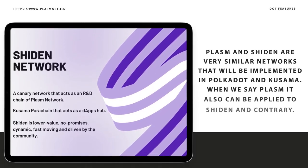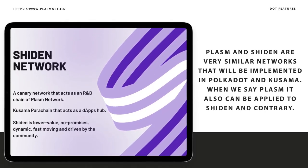Plasm and Shiden are very similar networks that will be implemented in Polkadot and Kusama. Today we also discuss a very important point: Kusama parachain crowdloan and Shiden Network crowdloan strategy.